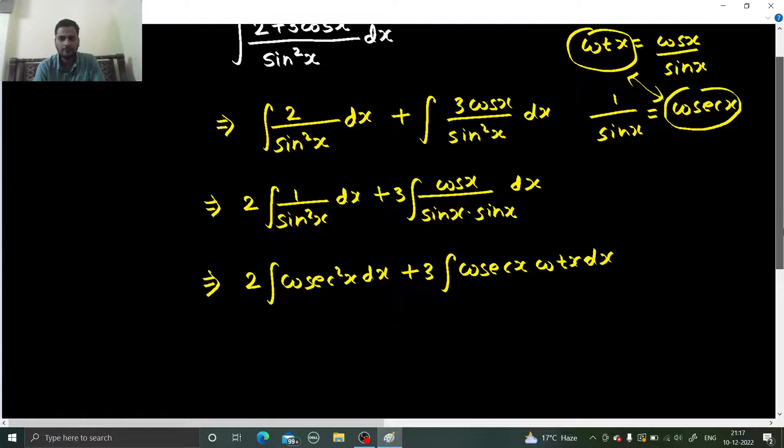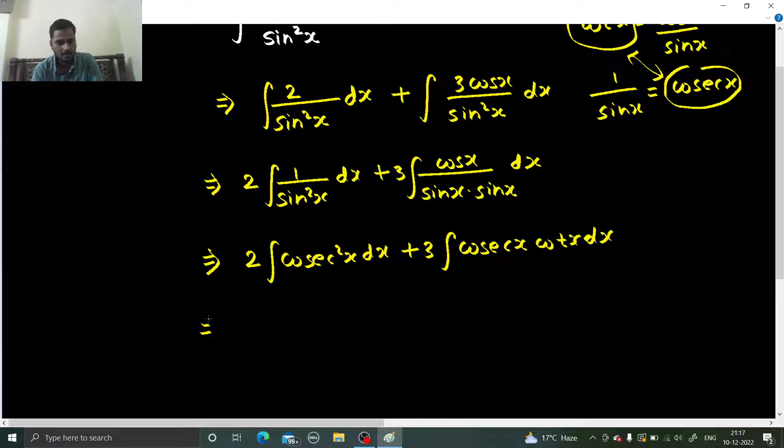I hope you know the formulas. This I have already used quite a few times. Integral of cosecant square x is minus of cot x.